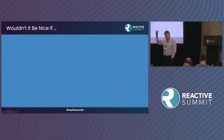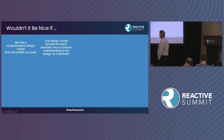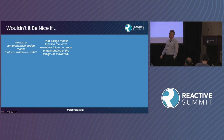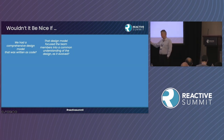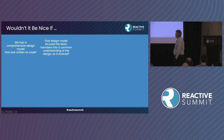With that preamble in mind, let me do some dreaming: wouldn't it be nice if we had a comprehensive design model written in code? That design model would focus your team members into a common understanding of the design as it evolves. It's not a static model you create once — it's part of the development process. It stays up to date and generates infrastructural code, so that when you compile after a change, the compiler tells you what needs to be changed.